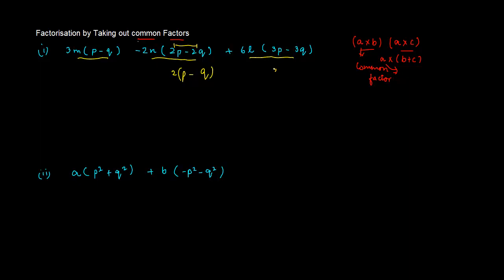Similarly, if amongst this, we take 3 common here, we can write this as 3 into P minus Q. This 3 can be multiplied by 6L. This 2 can be multiplied by 2N. And we have P minus Q over here.